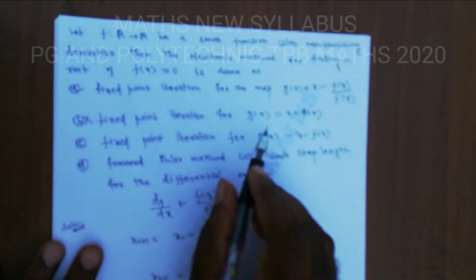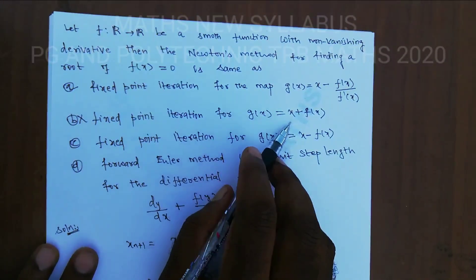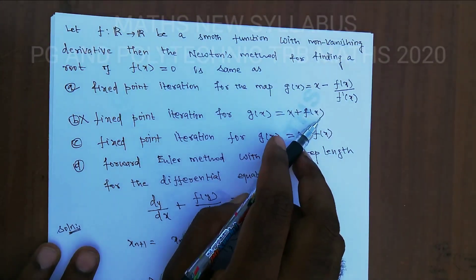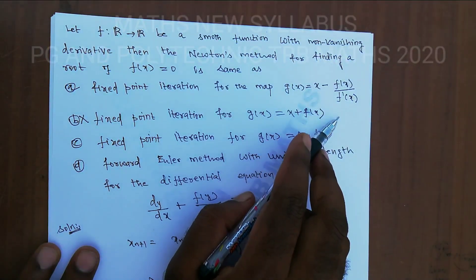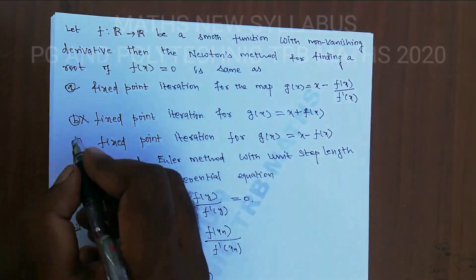For Option B, f(x_n) is not equal to x_n plus f(x_n), so Option B is not the Newton-Raphson method and is therefore incorrect.